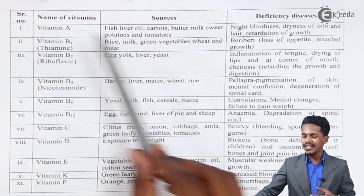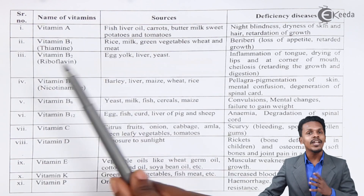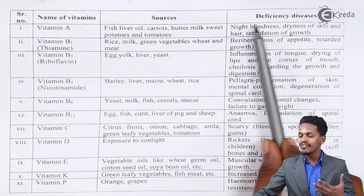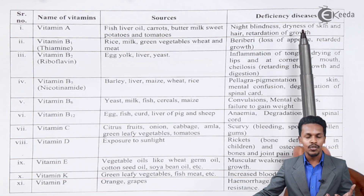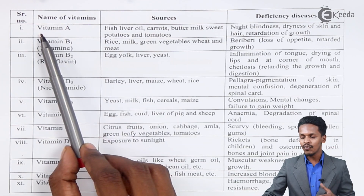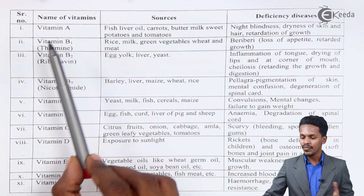Here we have a table so that we can understand what are the sources of the vitamins as well as what are the deficiency diseases caused by them. Talking about the first one, that is Vitamin A.